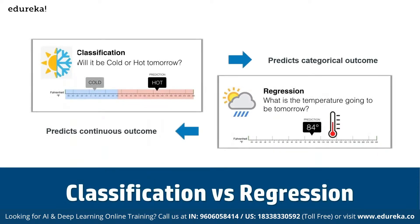In terms of algorithms, we have binary classification and multi-class classification. Comparing classification with regression: classification predicts categorical outcomes, such as whether it will be hot or cold tomorrow, whereas regression focuses on predicting continuous outcomes, such as what the exact temperature will be tomorrow.